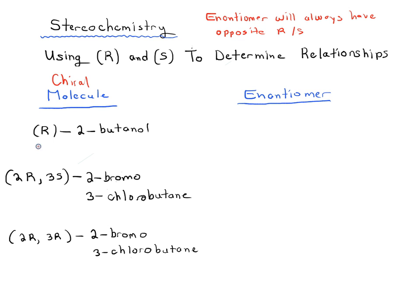So if we're starting with R-2-butanol, what is the enantiomer of that? We're not going to change the name — the name remains the same — we're just changing R to S. So it would be S-2-butanol.